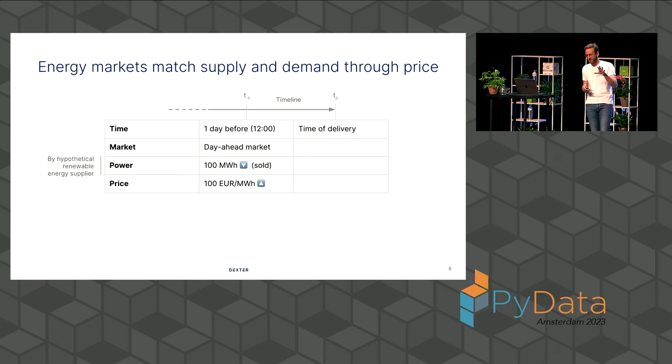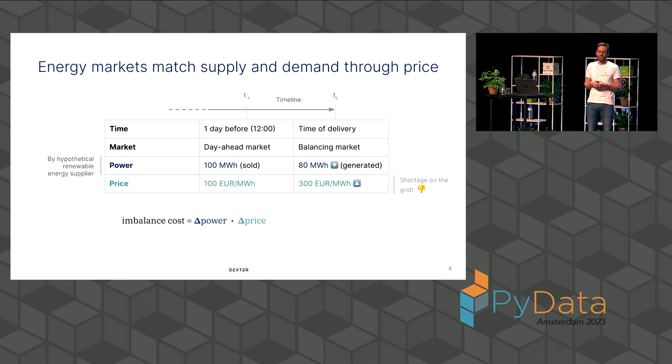And now this brings me to what happens when we sold the wrong quantity on the day ahead market. So let's, in this example, say that we have actually only generated 80 megawatt-hours, while we sold 100. Well, this actually means we're 20 megawatt-hours short. So we have to basically buy that back on the time of delivery on the balancing market. We buy back that energy for 300 euros a megawatt-hour. Why is this again so high? Now, because everybody has the same problem. Everybody might have under-forecasted and under-predicted. And so everybody's short. There's a general shortage on the grid. So the price on the balancing market goes up. A negative imbalance. The system is short.